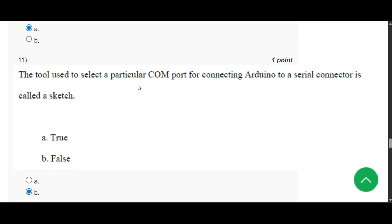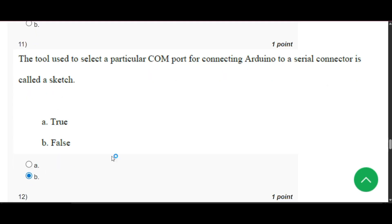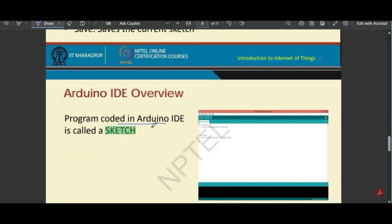Now question number 11: The tool used to select a particular COM port for connecting Arduino to a serial connector is called a sketch. It will be false because sketch is a program coded in Arduino IDE.